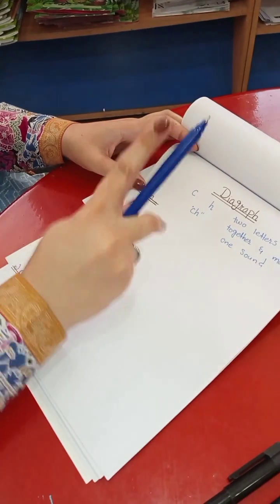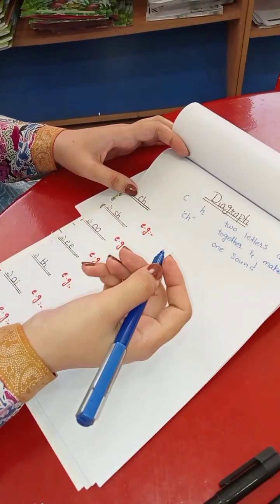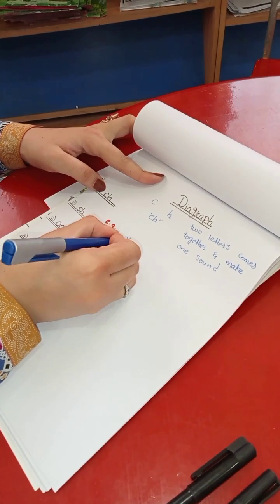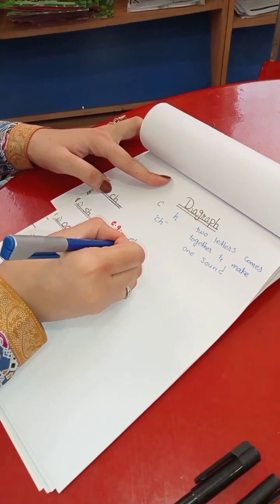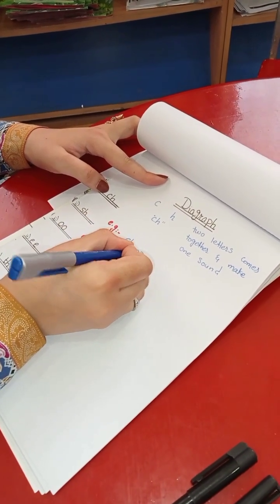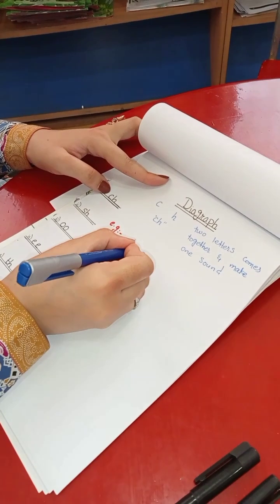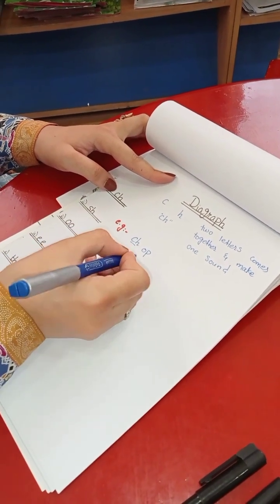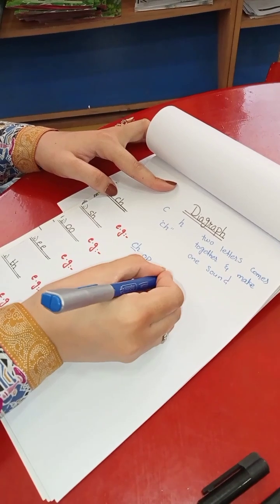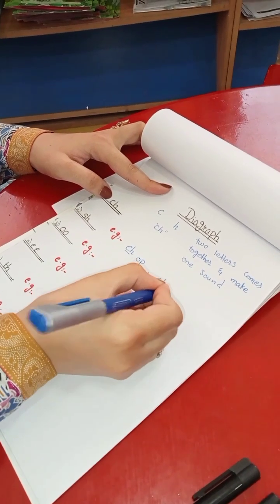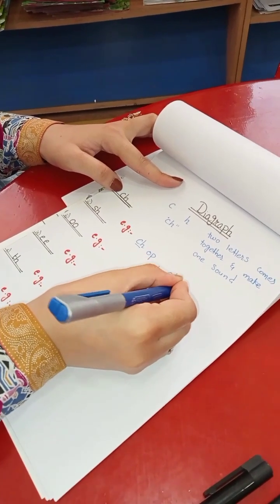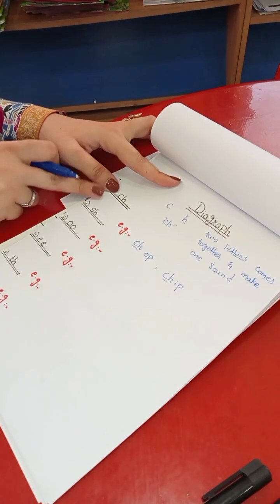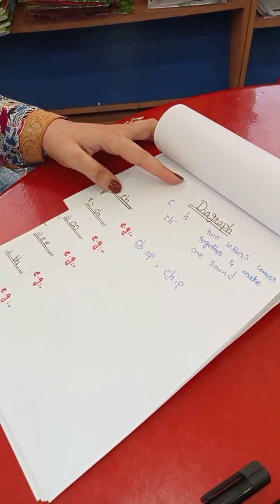So let's learn about the examples of CH. There are different examples of CH. Like 'ch-op' — this will become 'chop'. And 'ch-i-p' — this will become 'chip'. So this is the first digraph CH.